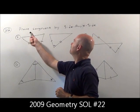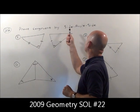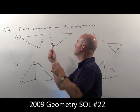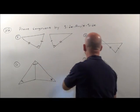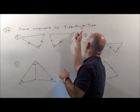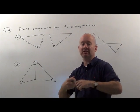Problem 22 says prove congruent by side-angle-side. I want to know which of these triangles can be proven congruent by the side-angle-side postulate or theorem.